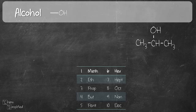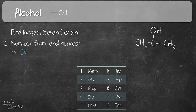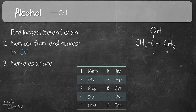We're going to start with alcohol. Looking at our example, we need to first find the longest chain — that's three carbons straight in a row. We're going to number it from the end that is nearest to OH. Since in this example our OH is right in the center, it doesn't matter if we start numbering from the left or from the right, because OH will always be on the second carbon. So we number from the left and name it as an alkane. Because there are three carbons, three is P-R-O-P, and to indicate that it's an alkane, we end with the suffix A-N-E. So our name for this compound would be propane.